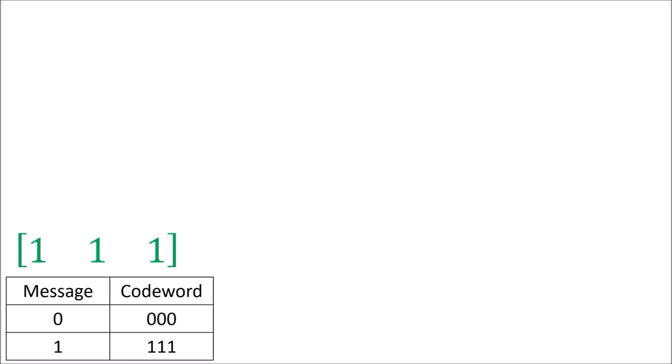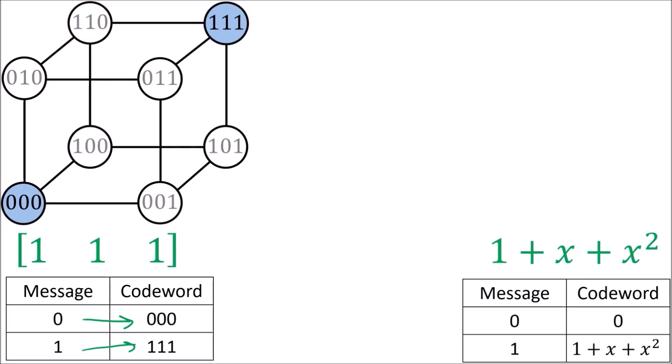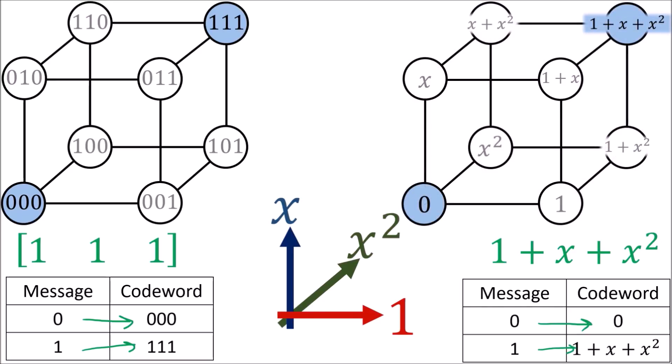Similarly, the best 2 out of 3 repetition code has this generator matrix, and the codeword space looks like this. This is similar to using a generator polynomial 1 plus x plus x squared, and getting a codeword space with the directions 1, x, and x squared. Now, these cases of generator polynomials I've shown you are extremely simple. In order to understand the more complicated cases, I'm going to need to discuss a few properties about polynomials.